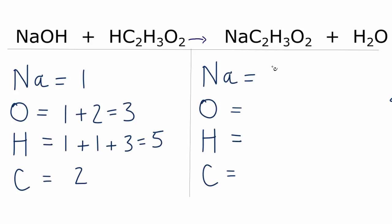Over on the product side, we have one sodium. Let's do it in order. So we have oxygen, we have two plus the one, three oxygens. Hydrogens, three, plus the two in the water, five hydrogens, and then the carbons, we have two right here.